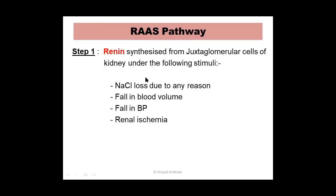Step one: the starting point is the synthesis of renin. Renin is synthesized from the juxtaglomerular cells of the kidney under different stimuli. These stimuli can be sodium chloride loss for any reason, fall in blood volume, fall in blood pressure, or renal ischemia. Any of these four factors can stimulate the synthesis of renin.